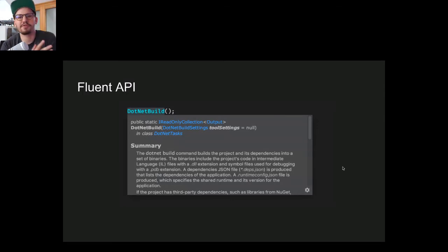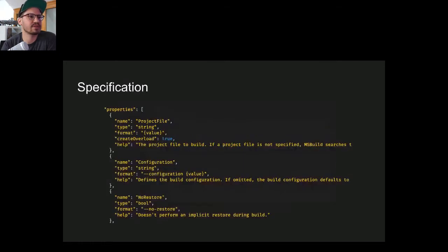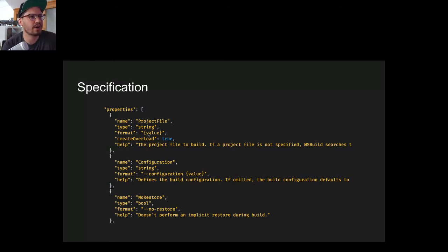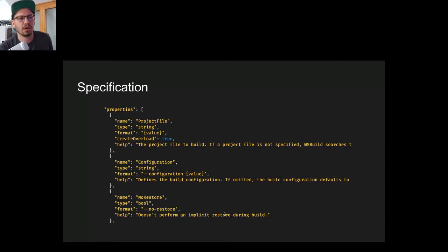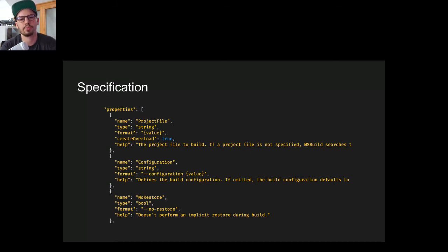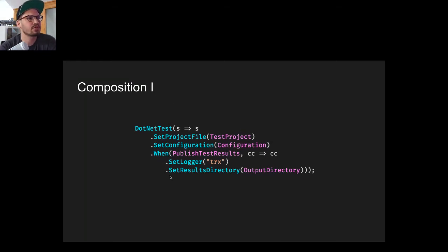The fluent APIs are not written manually — they use a specification file where metadata about arguments is gathered. For example, project file is a string passed as a value; configuration gets rendered as '--configuration value'; no-restore is a boolean rendered as '--no-restore.' This specification supports various types like dictionaries, lists, and lookup tables.